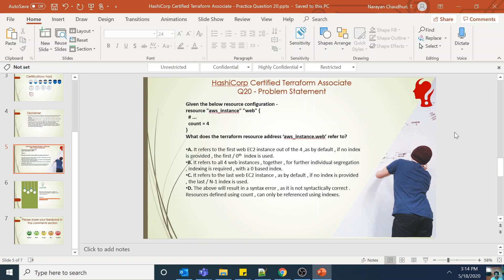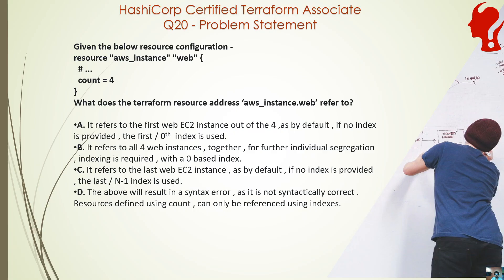Hello everyone. Welcome back to the HashiCorp Certified Terraform Associates certification catalyst program. We are back with question number 20. Given the below resource configuration: resource AWS instance web, count equal to 4. What does the Terraform resource address aws_instance.web refer to?